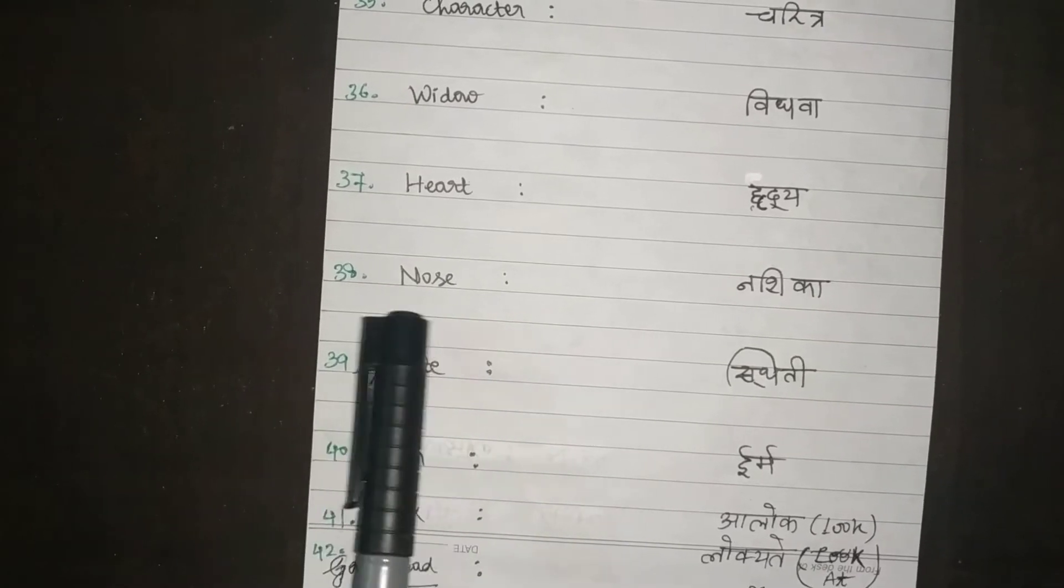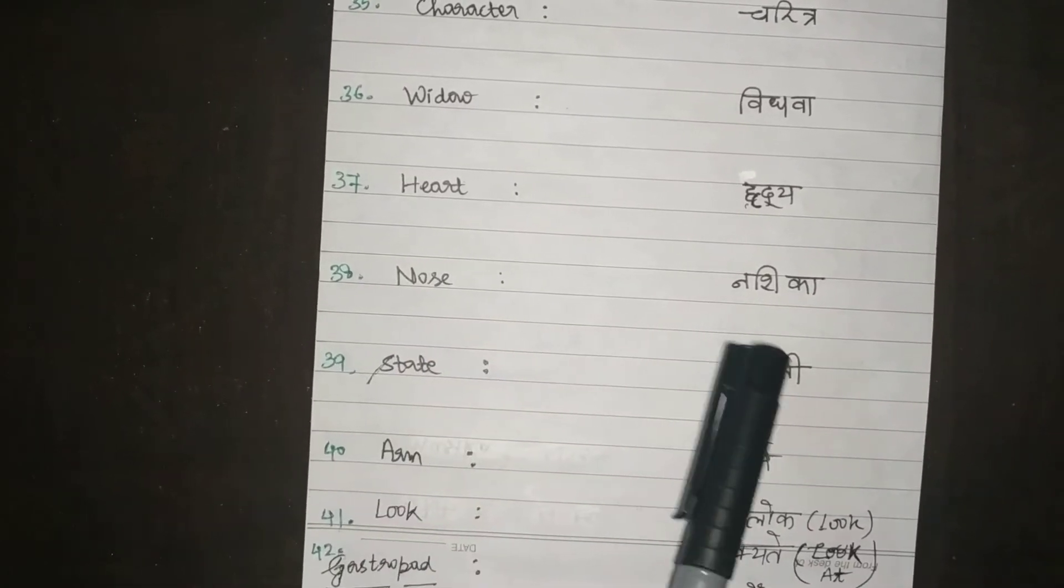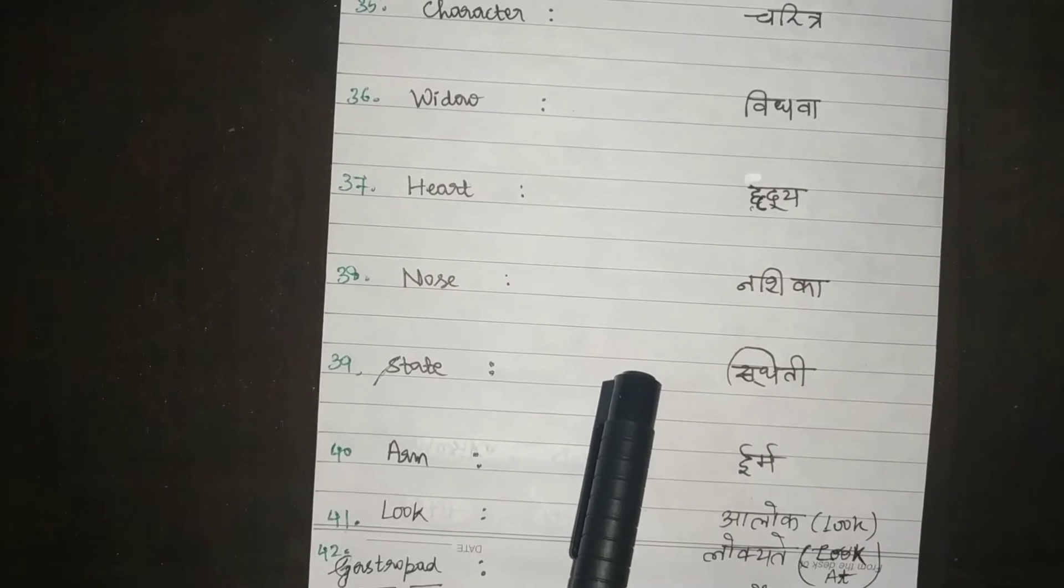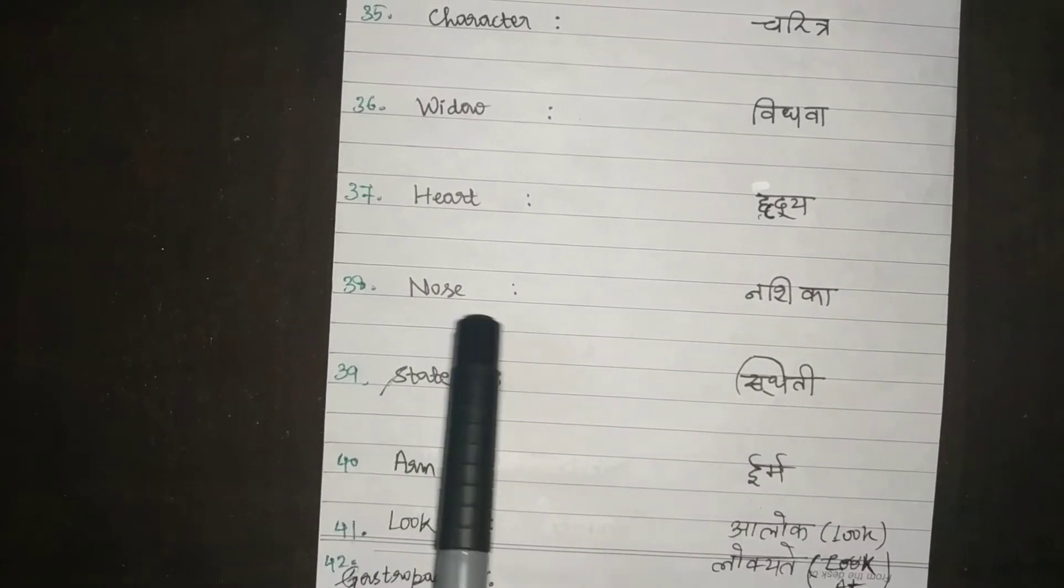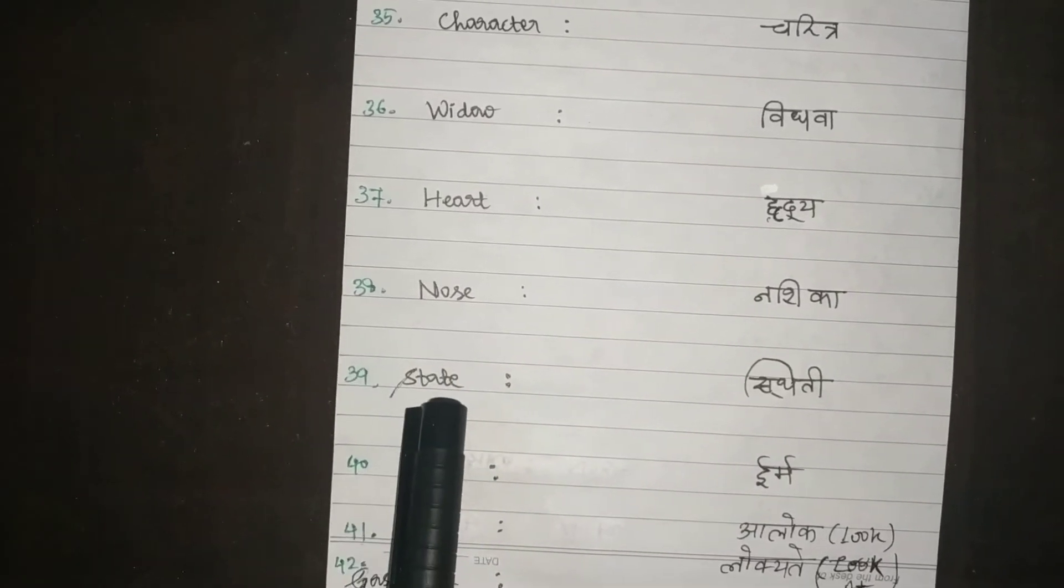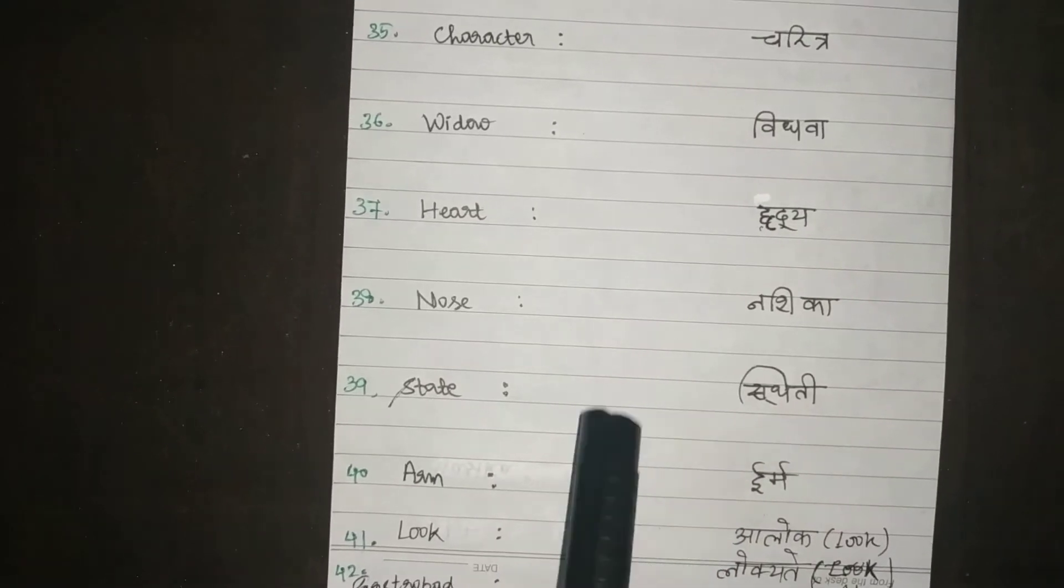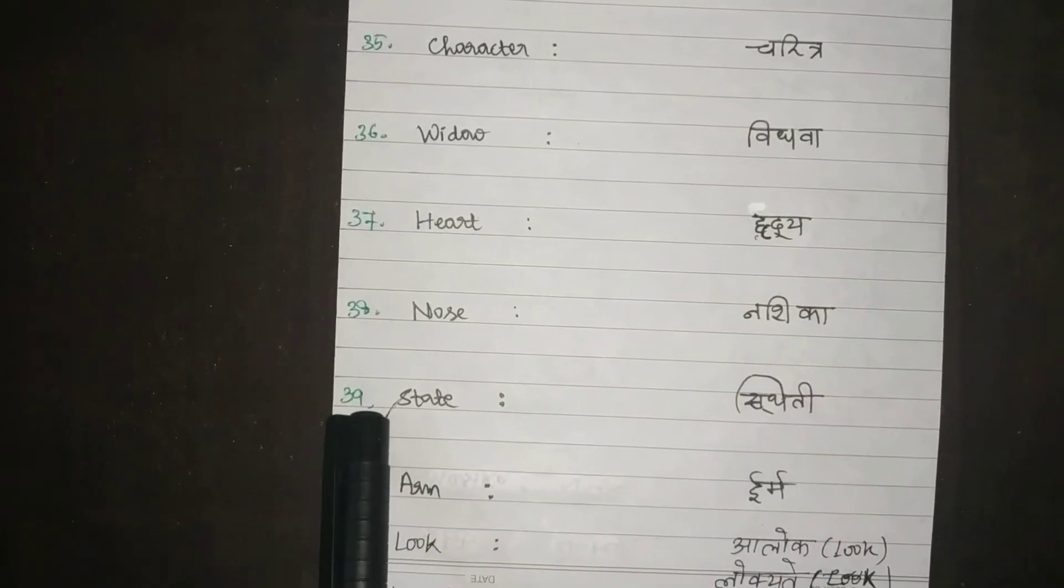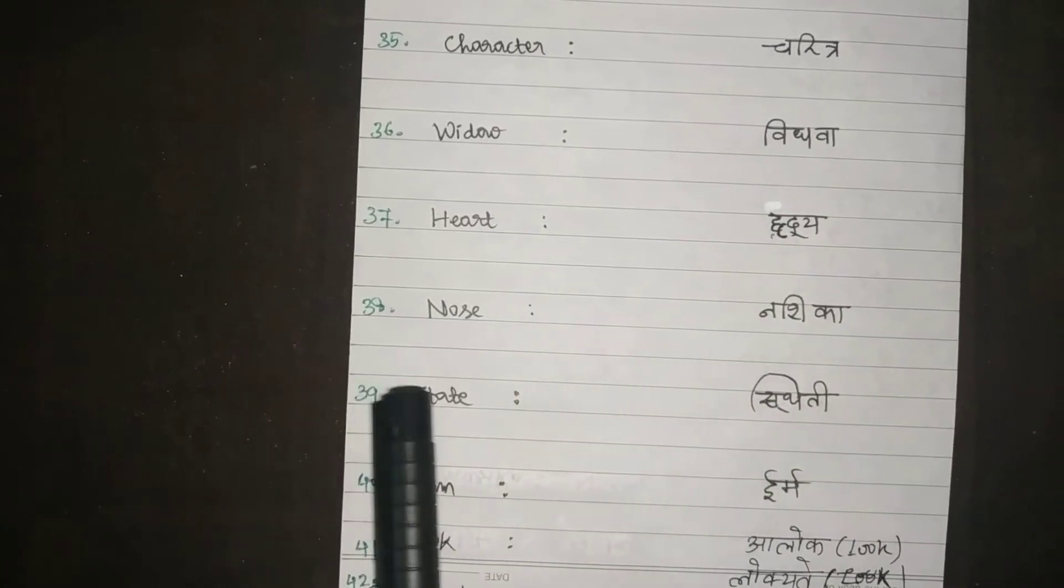The English word State came from Sthiti. What's the state of your family? Aapke paribar ki kya sthiti hai? Sthiti state. Tha changed to ta.